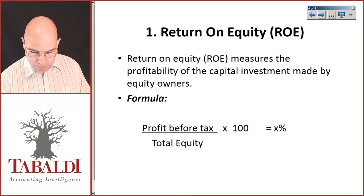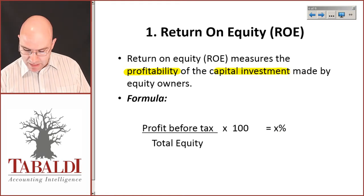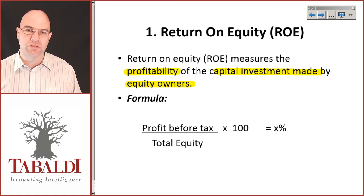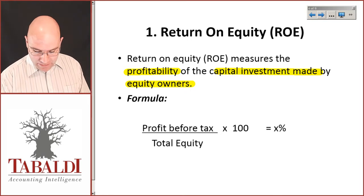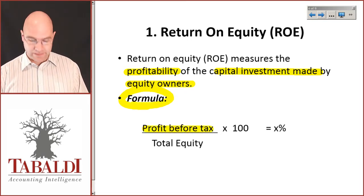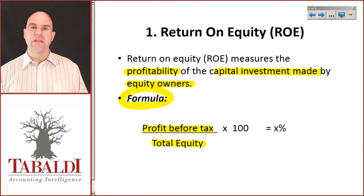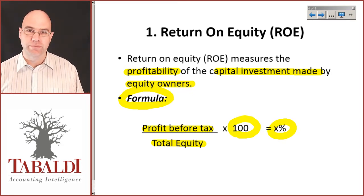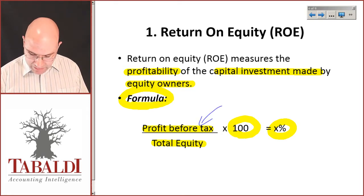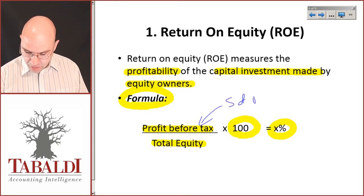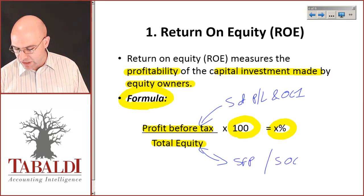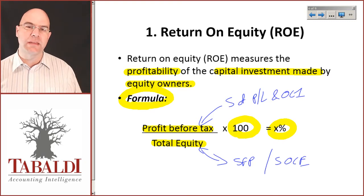Return on equity measures the profitability of the capital investment made by equity owners. This is probably the most important ratio. The formula is: take profit before tax and divide it by total equity, then multiply by 100 to get a percentage. Profit before tax comes from the statement of profit or loss and OCI. Total equity can be obtained from either the statement of financial position or the statement of changes in equity — or, if it's a CC, the statement of members' interest.